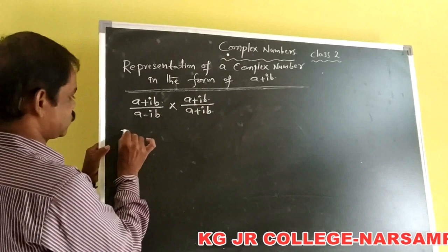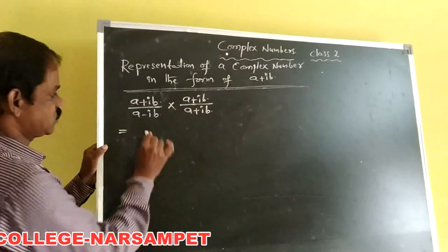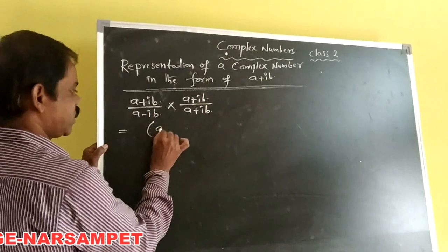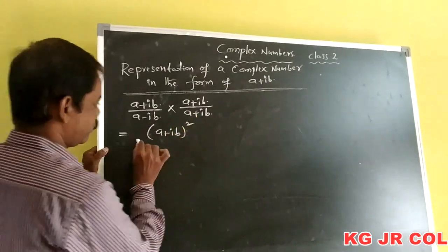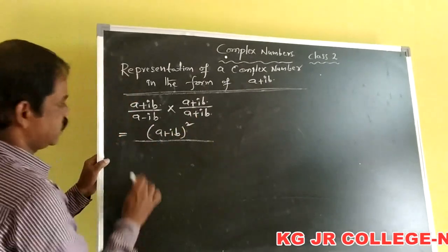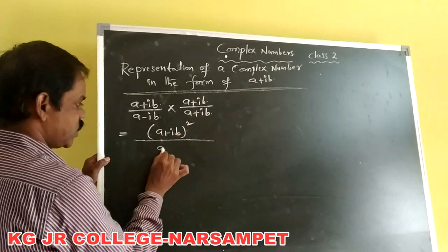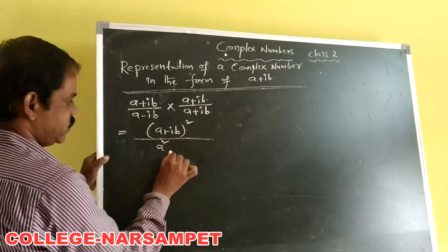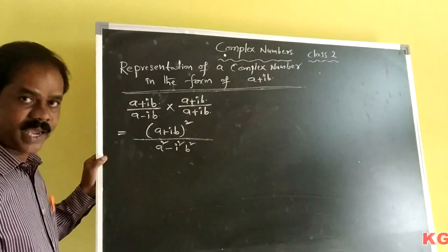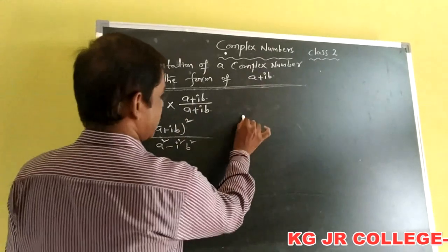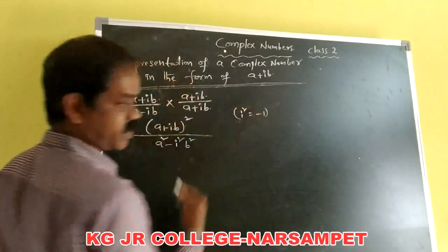So Z equals A plus iB into A plus iB, divided by A minus iB into A plus iB, which equals A squared minus i squared B squared. According to Euler's calculation, i squared value is equal to minus 1.